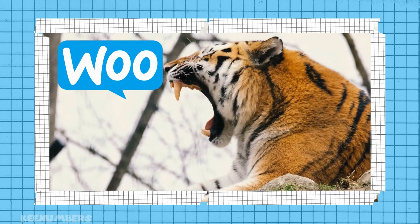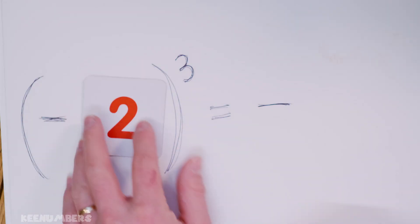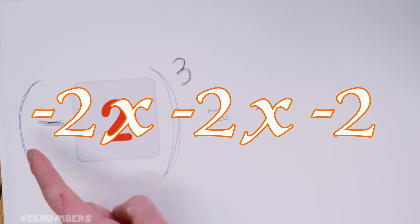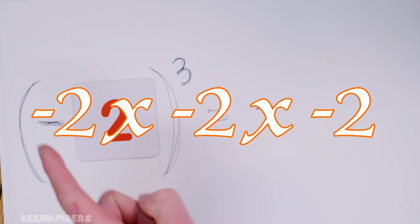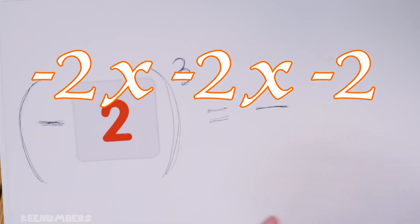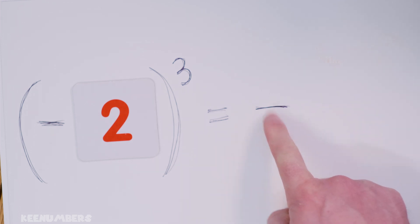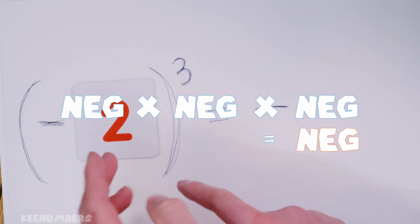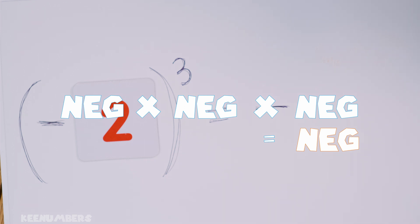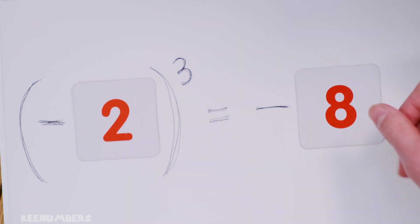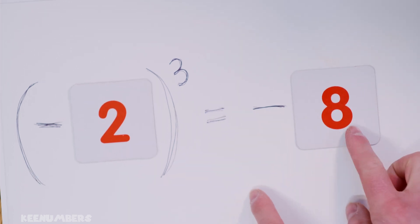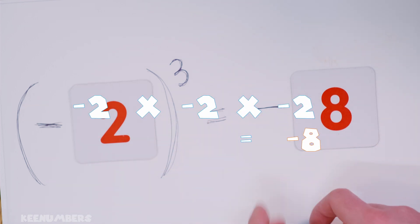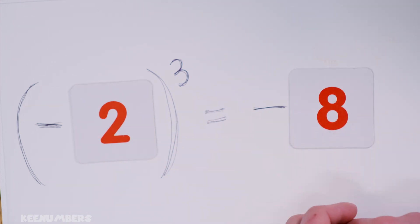What about negative two cubed? A negative times a negative is positive, but you multiply by another negative, that's going to make it negative. So we know the answer is negative. What's two by two by two? If you said ocho, you're correct — two by two by two is eight. So negative two cubed is negative eight.